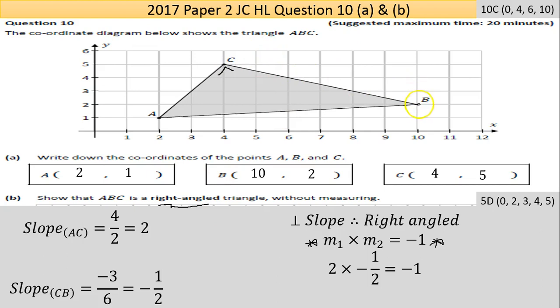The line CB goes down 3 and across 6, so that's negative 3 over 6 which equals negative one-half. If the slope multiplied by its other slope equals minus one, then they're perpendicular slopes and therefore it's a right angle. Two times negative one-half equals minus one, so it is. That saves a lot of time.